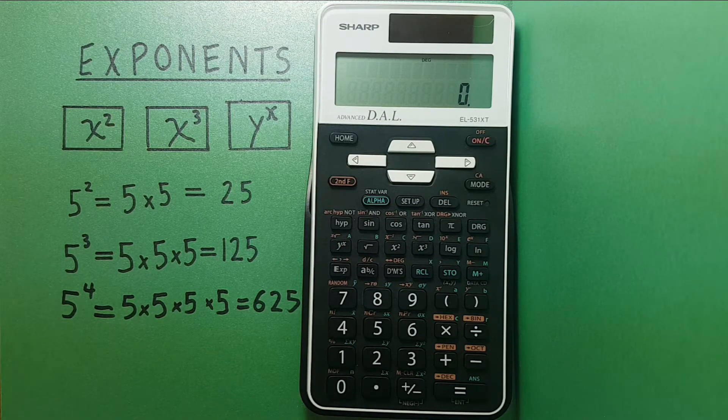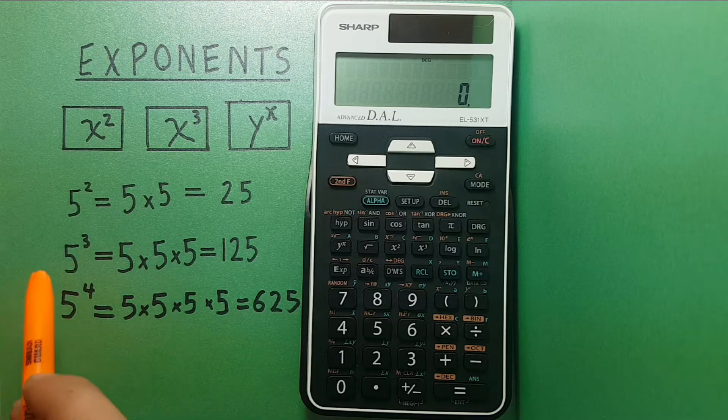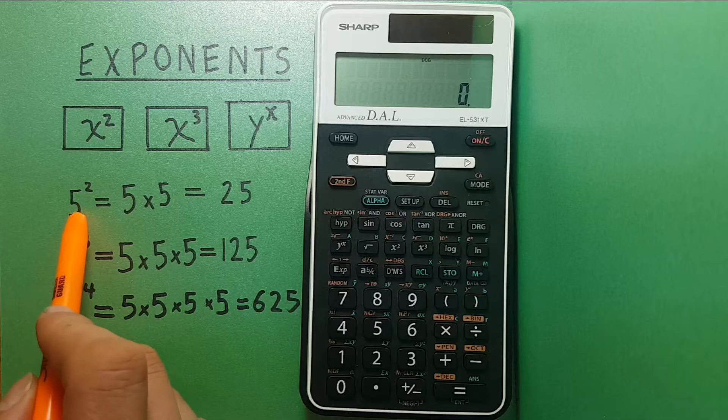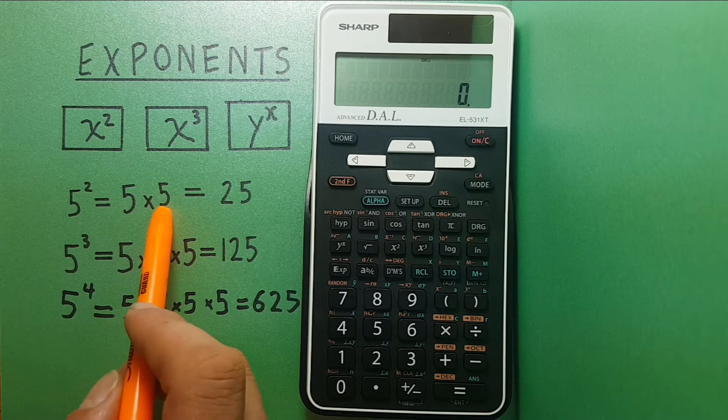To start, if we simply wanted to square a number, which we know is multiplying the number by itself, so 5 squared is the same as 5 times 5, which we should know is equal to 25.